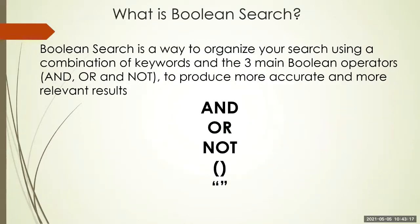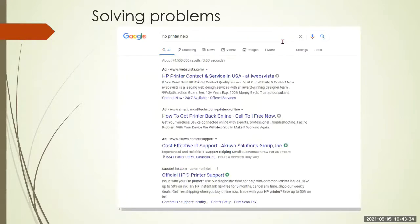So what is a Boolean search? A Boolean search is a way to organize your search using a combination of keywords and the three main Boolean operators — AND, OR, and NOT — to produce more accurate and more relevant results. We're going to solve some problems using those.